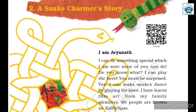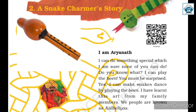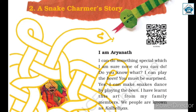A snake charmer is called 'Saperra' in Hindi. It is a person who entertains by controlling the behavior of a snake, using an instrument called a bean. You may have seen snake charmers before, but you will not get to see them today. Why? Because the government has banned it — no person can use any animal for entertainment purposes. That is the reason we will read this chapter.